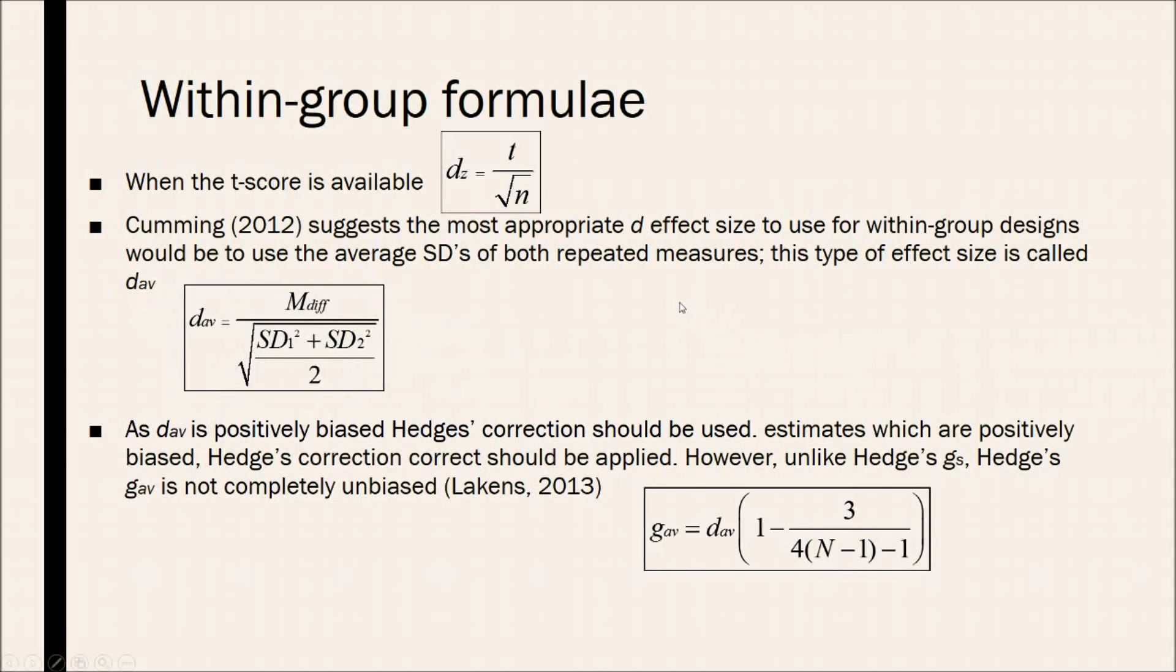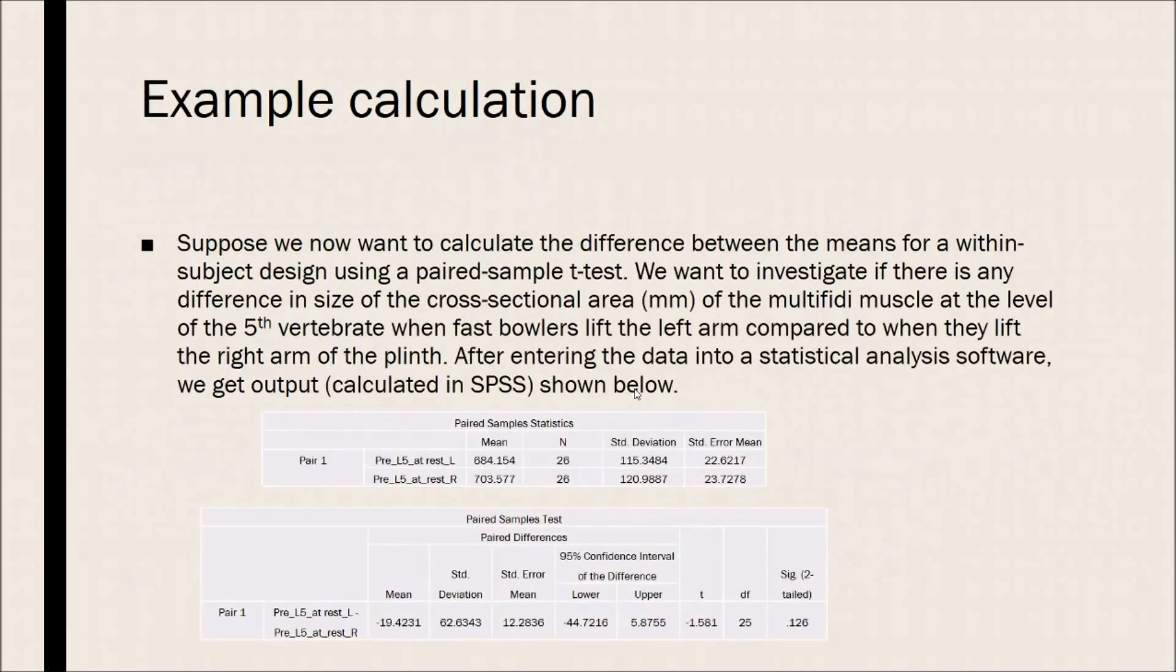So, as DAV is positively biased, Hedges' correction should be used. Like all estimates which are positively biased, Hedges' correction should be applied. However, unlike Hedges' GS, Hedges' GAV is not completely unbiased, just less biased than DAV.